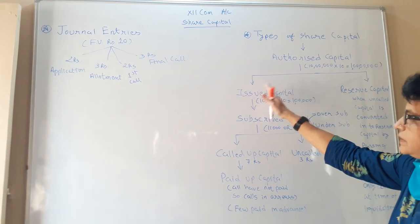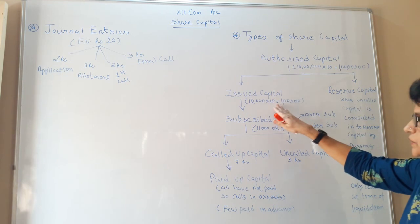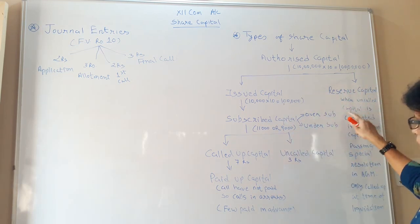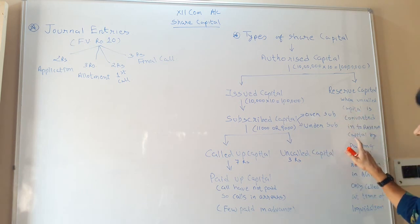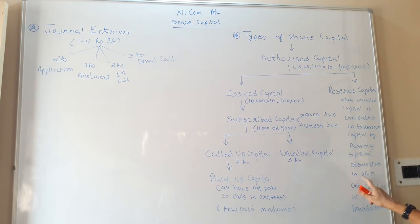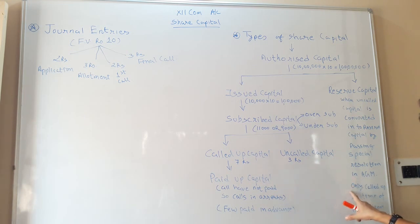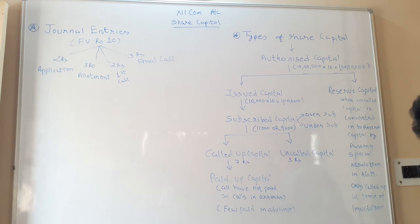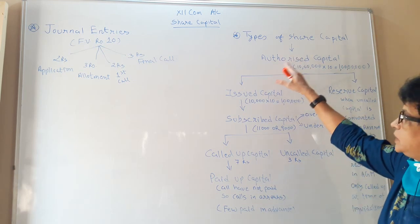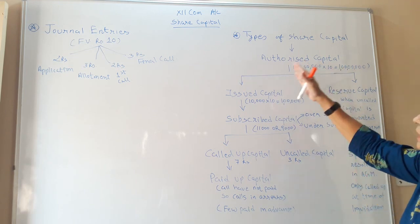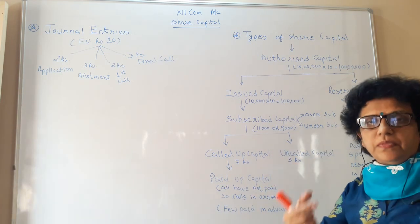The uncalled capital can ultimately be converted into reserve capital by passing a special resolution in the annual general meeting, with shareholders' permission, declaring that this money is not needed and is being converted to reserve capital. This reserve capital can be called only at the time of liquidation of the company; otherwise it is not demanded. So the total authorized capital may be partly issued or partly converted as reserve capital.